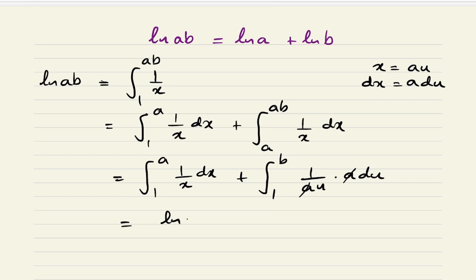Evaluating the integrals, we have ln(x) from 1 to a, plus ln(u) from 1 to b. Applying the limits: ln(a) - ln(1) equals ln(a), plus ln(b) - ln(1) equals ln(b). So we get ln(a) + ln(b), and we're done.